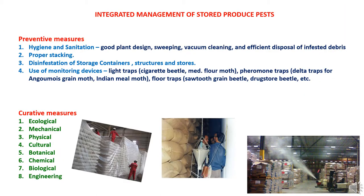The control methods of stored product pests can be categorized into preventive and curative measures. Under preventive measures, first is hygiene and sanitation — which includes good plant design, sweeping, vacuum cleaning, and efficient disposal of infested debris. There should be proper stacking with supervision and monitoring of stored material, and disinfestation of storage containers, structures, and stores should be carried out in a timely manner.